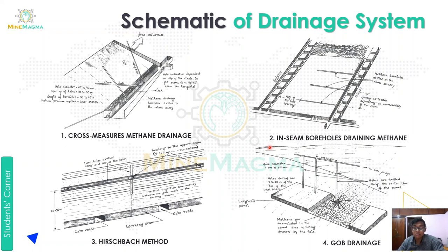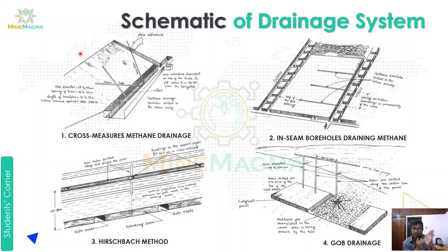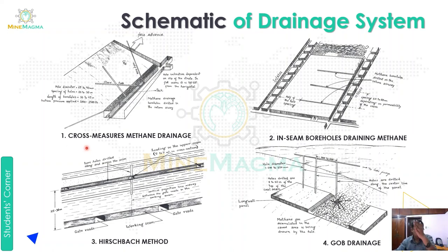The third method is the Hirst batch method. Here, boreholes are drilled along and across the seam. A heading is made in the upper seam with a cross-section of 5 to 7 m², and boreholes are drilled along and across from that heading. The methane gas is then extracted from those boreholes.